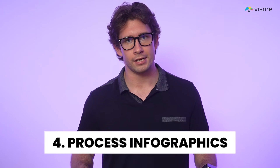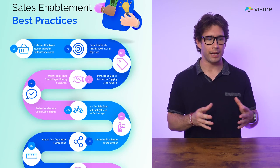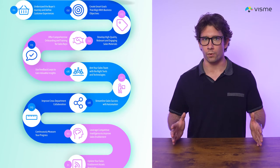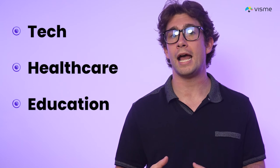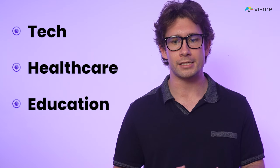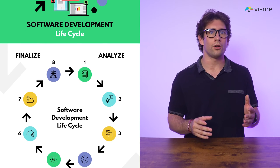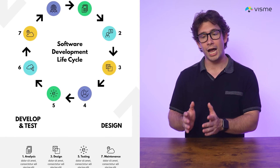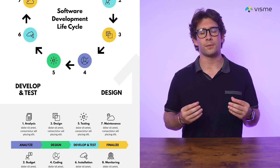Number four is process infographics, which break down workflows or step-by-step processes, making them perfect for explaining how things work. Whether you're guiding viewers through a recipe, explaining a product assembly process, or mapping out customer service steps, process infographics simplify complex workflows. They're particularly popular in tech, healthcare, and education, where step-by-step clarity is essential. For example, a tutorial on using a new software feature can guide users step-by-step with visuals for each action, reducing confusion and helping users grasp the process more quickly.